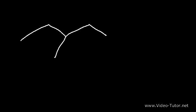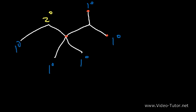Let's try another example. Identify every carbon atom as being primary, secondary, tertiary, or even quaternary. The carbons at the end are primary. Now what about this particular carbon atom? Notice that it's attached to two other carbon atoms, which means that it's a secondary carbon atom. And what about this one? We can see that it's attached to three carbon atoms, which means that it's a tertiary carbon atom. And finally, notice that this last one is attached to four carbon atoms, which makes it a quaternary carbon.